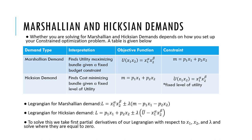For Marshallian demands, our objective function is our utility function and our constraint is our budget equation. For Hicksian demands, our objective function is our budget equation and our constraint is our utility function at a fixed level of utility. To solve for these, we take the partial derivatives of our Lagrangian with respect to X1, X2, and λ, and solve where they are equal to zero.